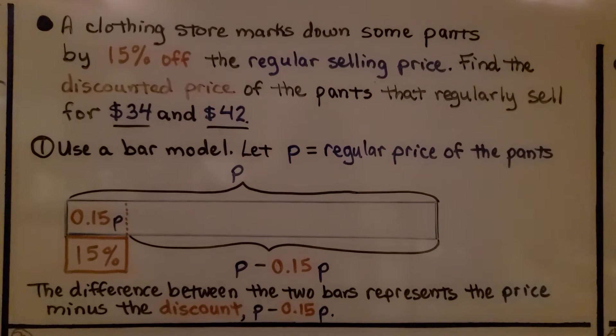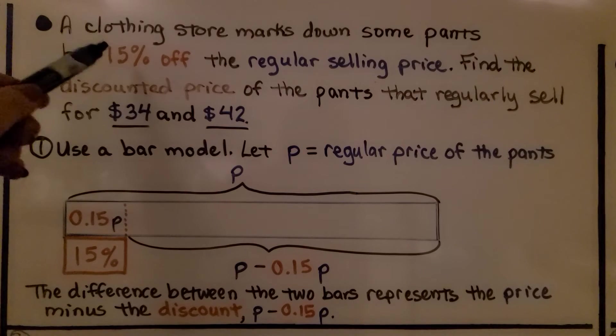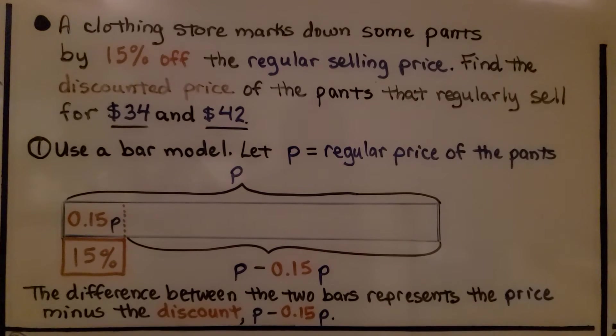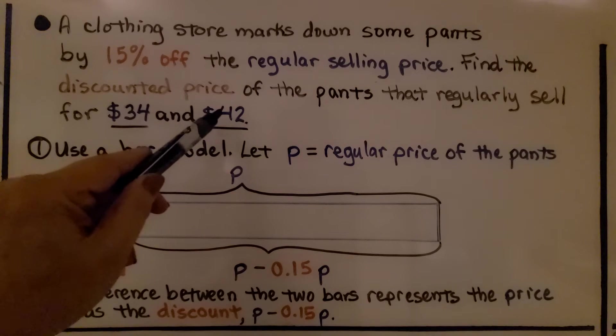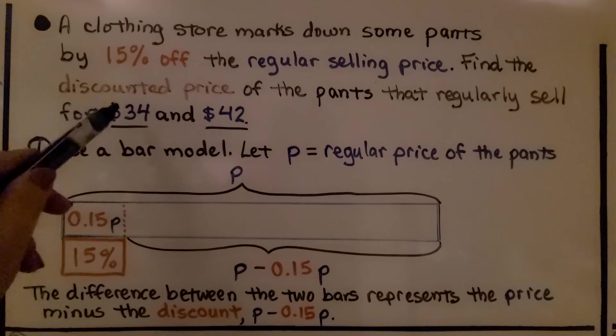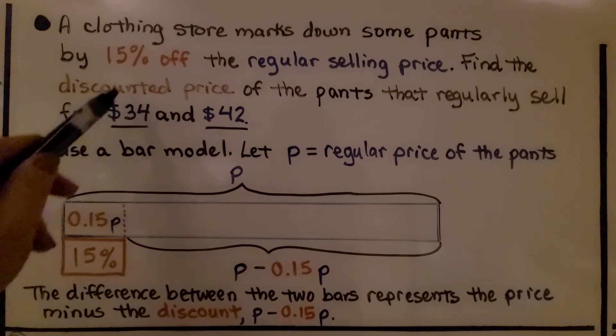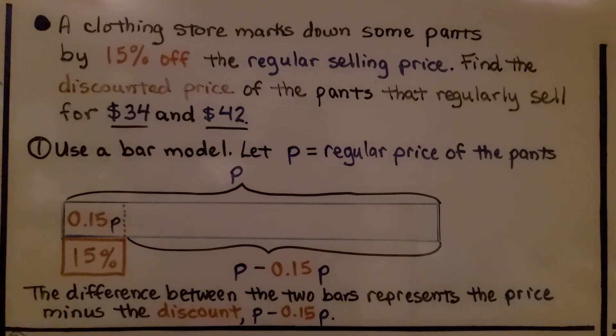A clothing store marks down some pants by 15% off the regular selling price. Find the discounted price of the pants that regularly sell for $34 and $42. So there's two different pants. One is normally $34 and the other pair is normally $42.